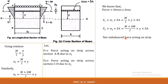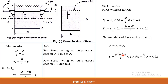The net unbalanced force acting on this particular strip is given by F equals F2 minus F1. Substituting: F2 minus F1 equals M plus delta M by I into y into delta A, minus M by I into y into delta A. After simplifying, M cancels and the remaining expression is delta M by I into y into delta A. This is the unbalanced force acting on this strip.